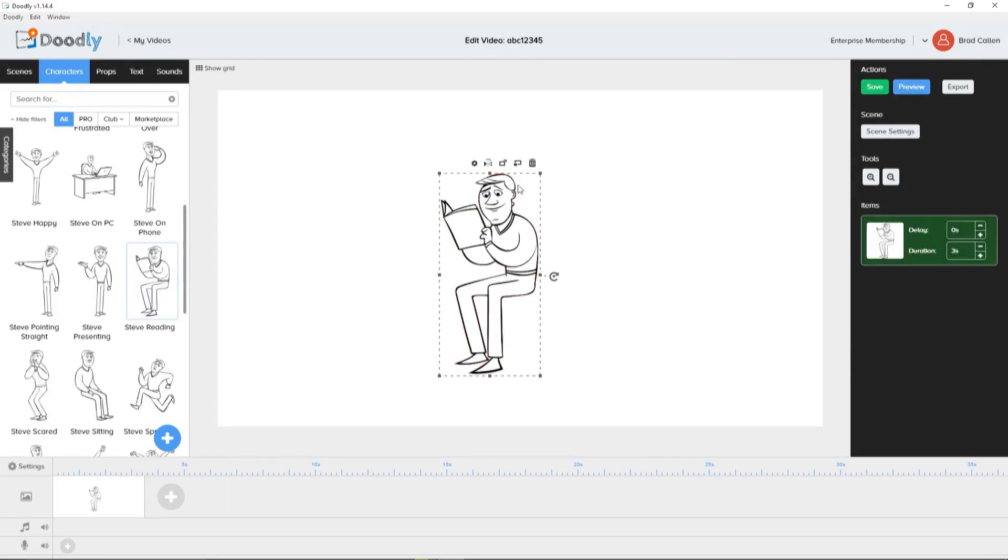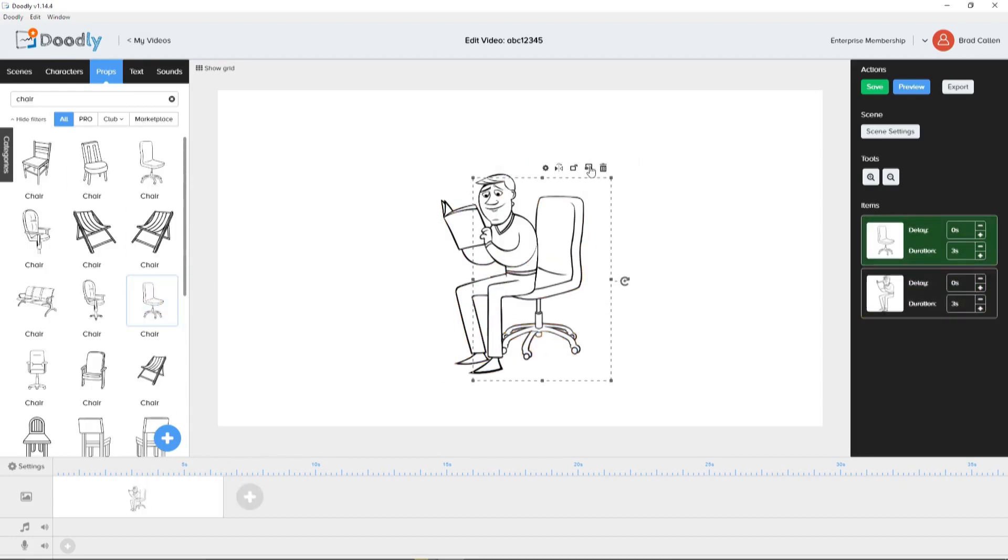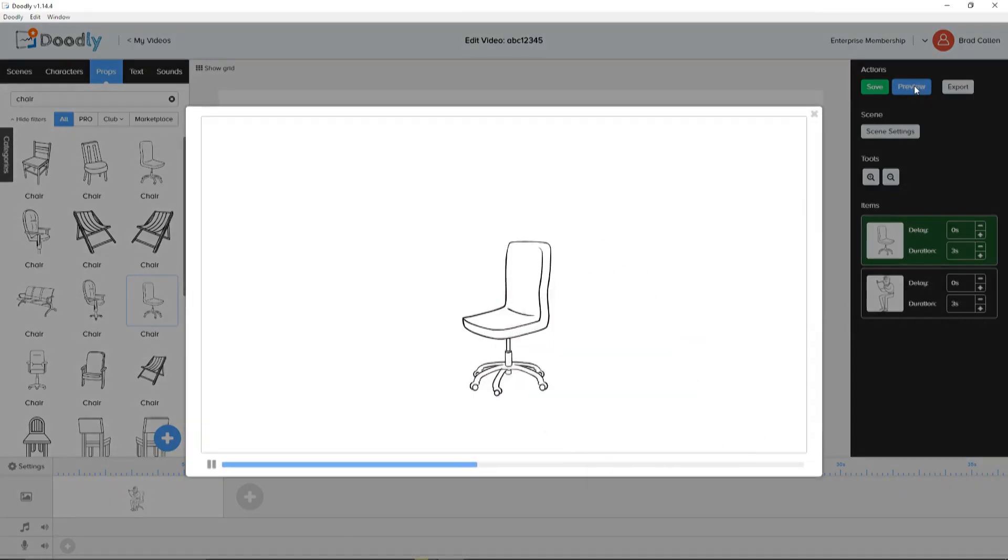First, we pick an image. Then we grab a prop. We put it together. Resize it. Layer it. And voila! We have Steve reading his book on his chair.